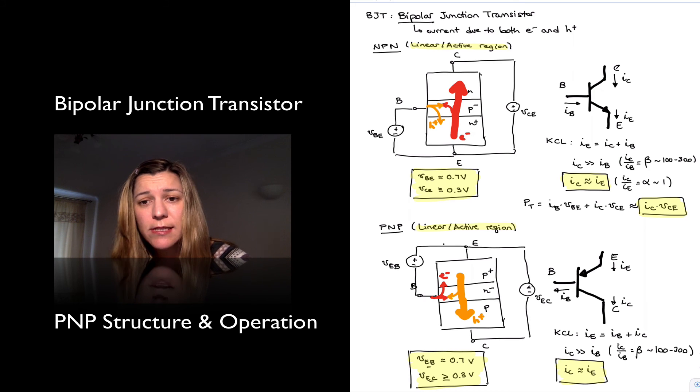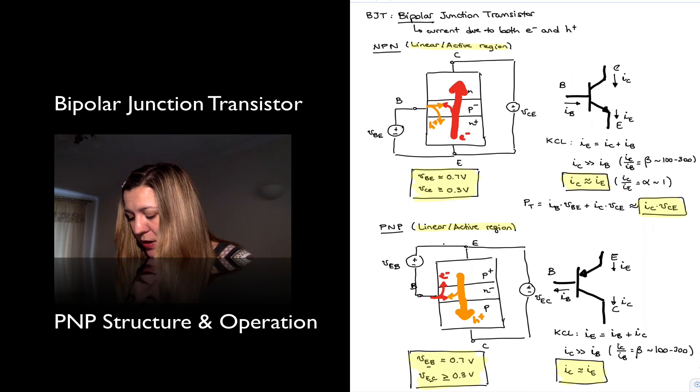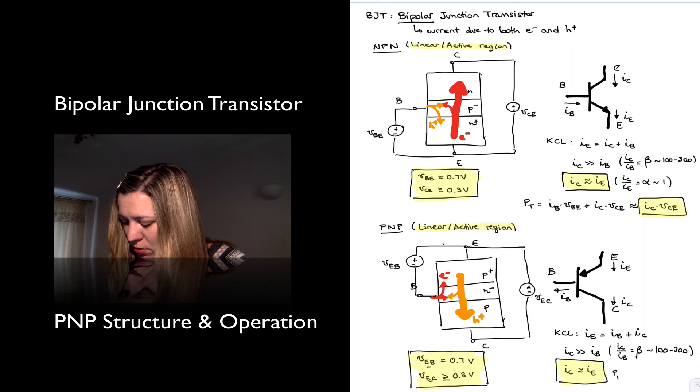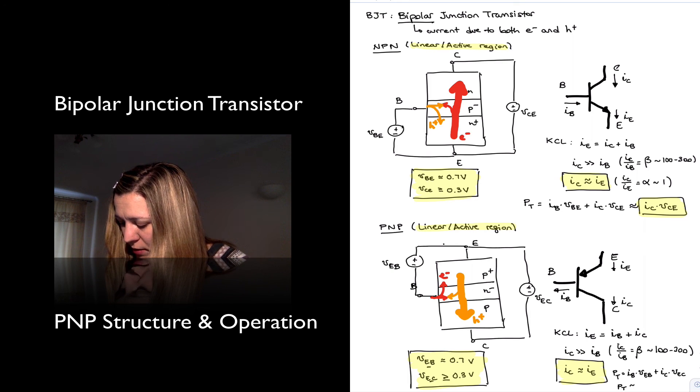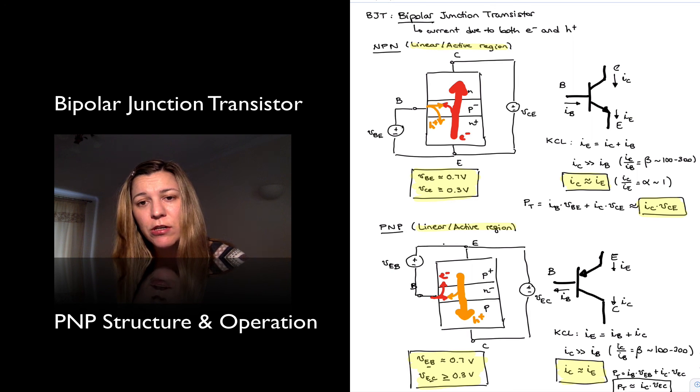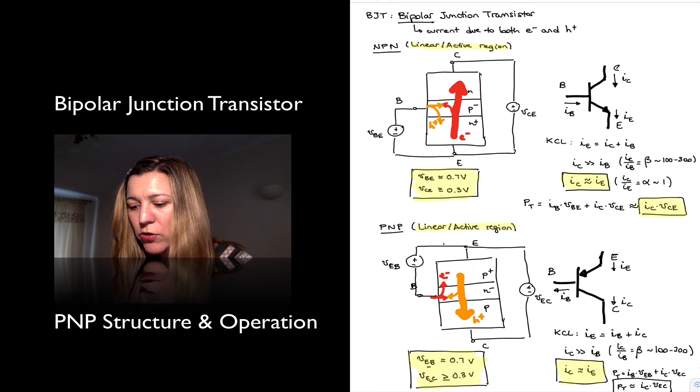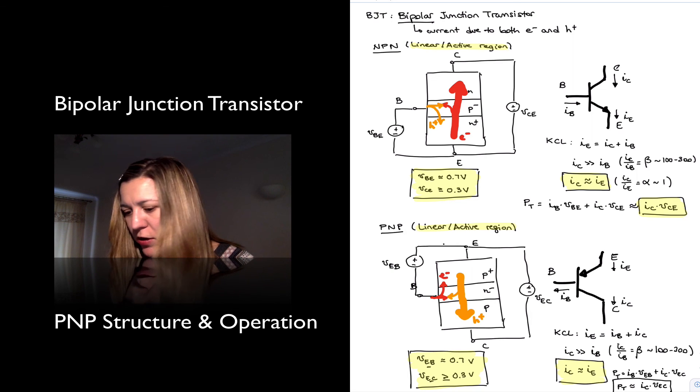Likewise, we are going to be using the same expression for the power dissipated in the transistor as before, except notice that, again, the voltages have reversed polarity. And so the power dissipated in the transistor is going to be now IB times VEB plus IC times VEC. And we are going to approximate it as IC times VEC for the same reason as before. That term is going to be much larger than the base current term, because both the collector current and the emitter-collector voltage are going to be greater than the emitter base voltage and the base current.